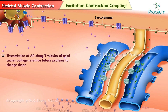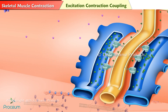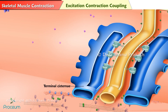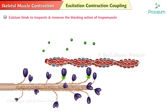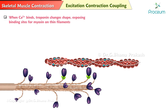Transmission of the action potential along the T-tubules of the triads causes the voltage-sensitive tubule proteins to change shape. This shape change opens the calcium release channels in the terminal cisternae of the sarcoplasmic reticulum, allowing massive amounts of calcium to flow into the cytosol within 1 ms. Calcium binds to troponin and removes the blocking action of tropomyosin. When calcium binds, troponin changes shape, exposing the binding sites for myosin on the thin filaments.